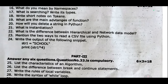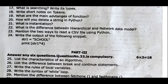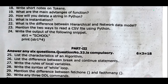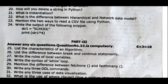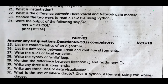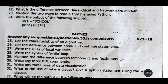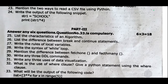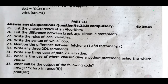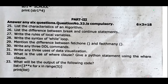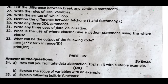Part Three is three marks — any six from questions 25 to 33. Question 25: List the characteristics of an algorithm. Question 26: List the difference between break and continue statements. Question 27: Write the rules of local variables. Question 28: Write the syntax of a while loop. Question 29: Mention the difference between fetchone, fetchall, and fetchmany. Question 30: Write any three DDL commands. Question 31: Write any three uses of data visualization. Question 32: What is the use of WHERE clause — give a Python statement using the WHERE clause. Question 33: What will be the output of the following code — list equal to [x*x for x in range(5)], print list?